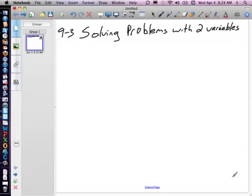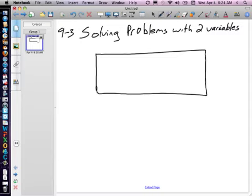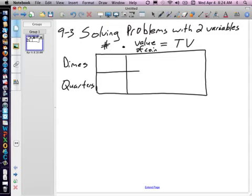Well, previously we made a chart for this, and we had the number of coins, the value times the value of coins, or the value of the coin, and that would equal the total value, which I can call TV. And in this problem we have dimes and we have quarters. So it's not too hard of a chart, but definitely you'll have to remember what to label those headings.